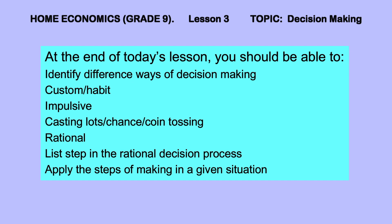At the end of today's lesson you should be able to identify different ways of decision making, which are: custom or habit, impulsive, casting lots or chance or coin tossing, and rational. We will also look at the steps in the rational decision making process and apply those steps in a given situation.